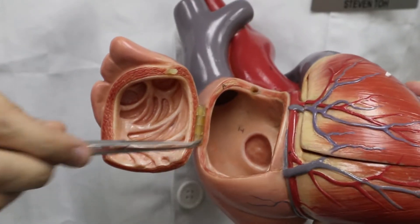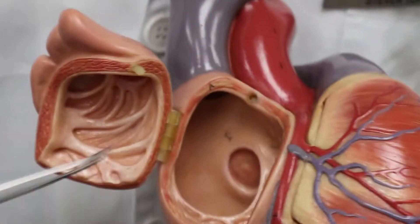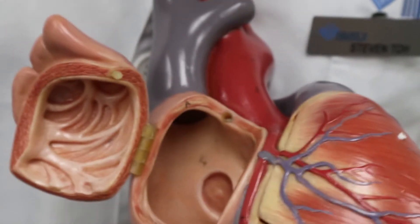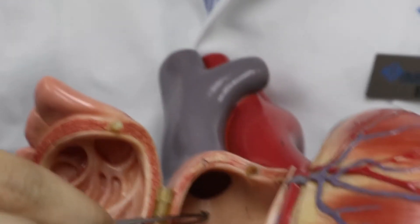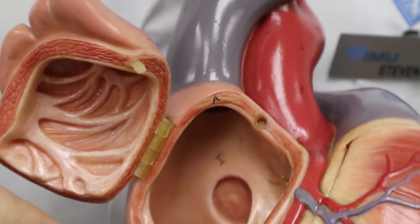The smooth part of the right atrium is known as the sinus venarum. The contents of the sinus venarum include the superior vena caval orifice, the inferior vena caval orifice, as well as the interatrial septum.